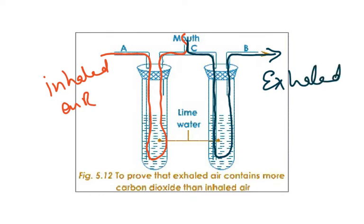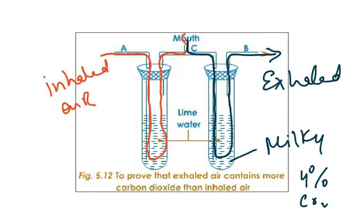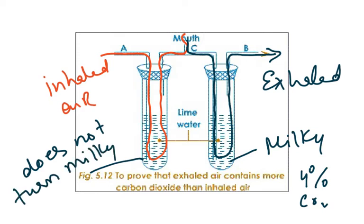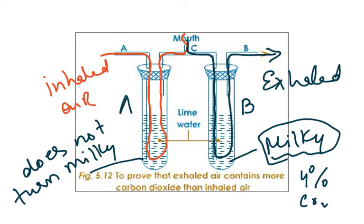The lime water in this tube will turn milky because there is 4% carbon dioxide in exhaled air, while this one does not turn milky because it only has 0.04% carbon dioxide. So the fact that exhaled air contains more carbon dioxide is why this lime water will turn milky on the B side of the test tube, while the A side test tube will not turn milky because that is the inhaled air passing through the lime water.